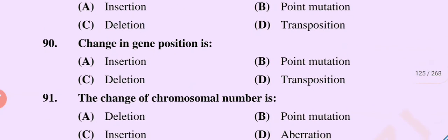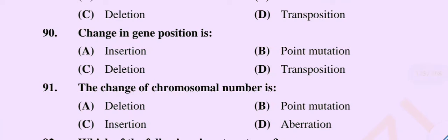Question number 90. Change in gene position is: option A, insertion; option B, point mutation; option C, deletion; option D, transposition. The correct option is option D, transposition.